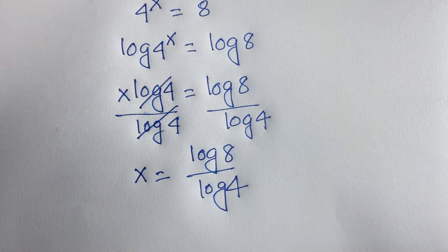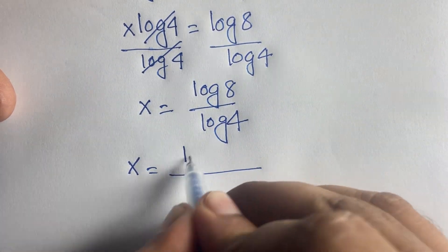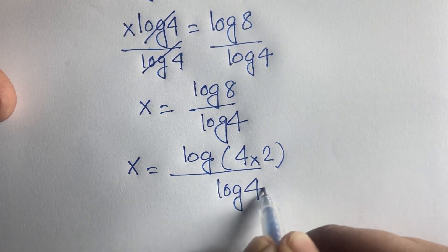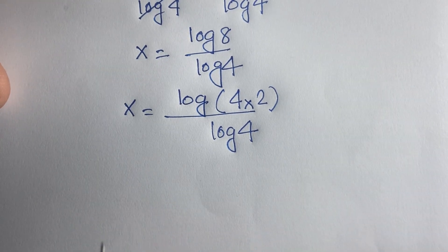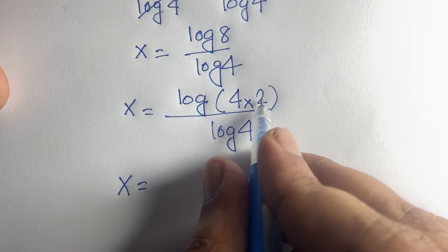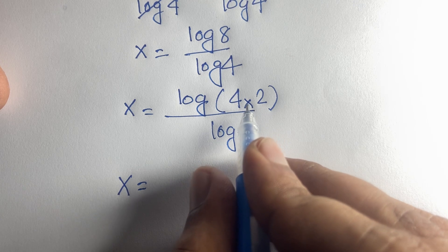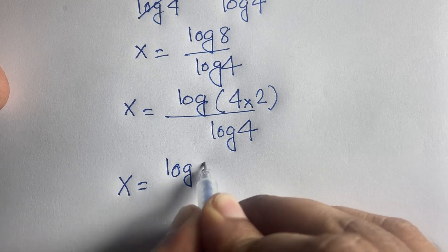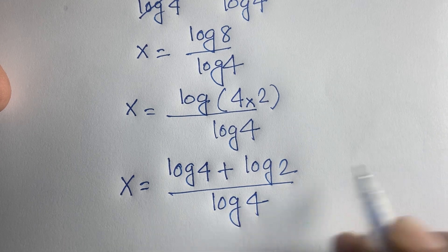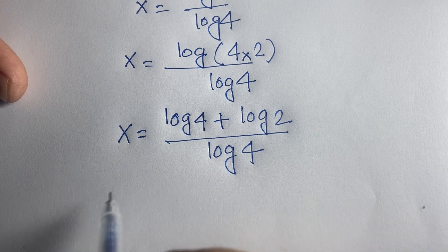Now this equation becomes x equals log 8 over log 4. I can write log 8 as log(4 times 2) over log 4. According to the logarithm product rule, log(a·b) equals log a plus log b, so this becomes (log 4 plus log 2) divided by log 4.